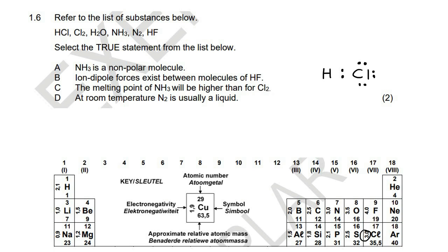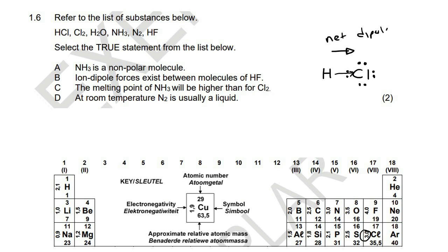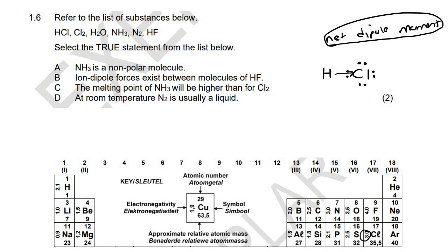So chlorine is more electronegative. That means chlorine loves electrons more than hydrogen does, so the electrons are going to be closer to chlorine — the electrons move towards chlorine. If you look at this entire molecule, there's only one arrow going like that, with no other arrow going the other way. So there's nothing that's going to cancel that arrow out, and this molecule is going to have a net dipole moment. So because it does have a net dipole moment, HCl is a polar molecule.